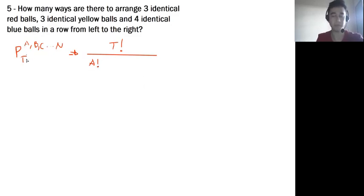For example, if some elements repeat three times, you put three factorial. It depends on how many repetitions of elements you have - you'll have B factorial, C factorial, and N factorial in the denominator.